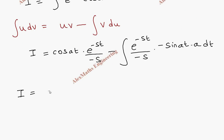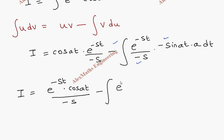Rewriting, the first term is e^(-st) times cos(at) divided by -s. Here we find three minus signs combining together. The two minuses from v and du cancel each other, giving a single minus overall, so we get minus the integral of e^(-st)/s times sin(at) times a dt.